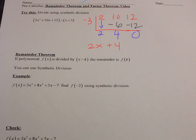Notice I have a remainder of 0. Since my remainder is 0, then x plus 3 is actually a factor of this. And then what that means is that 2x plus 4 is actually a factor also. We're going to talk more about that today.